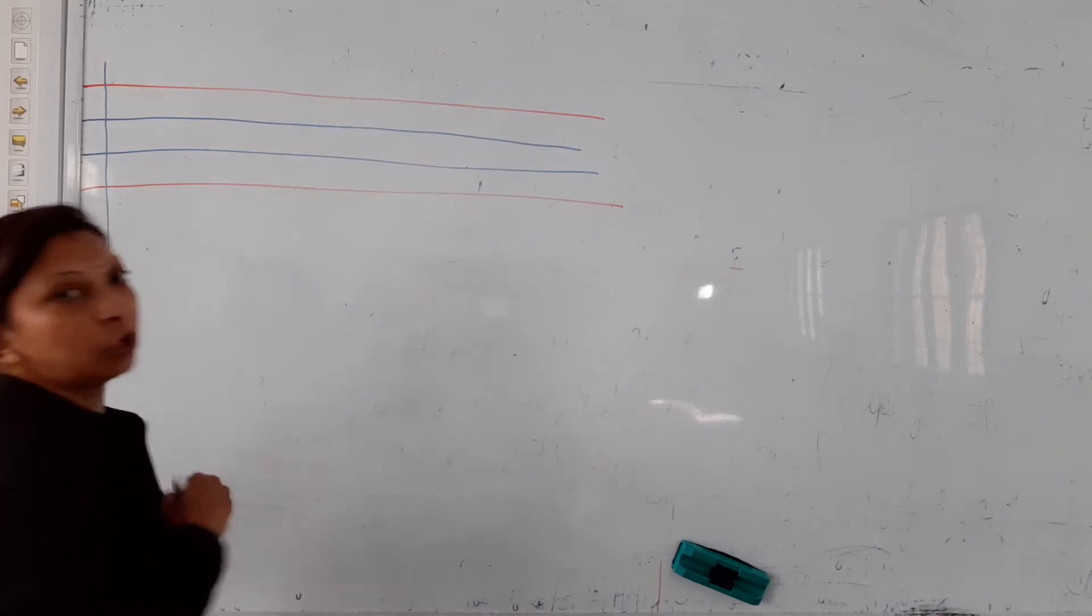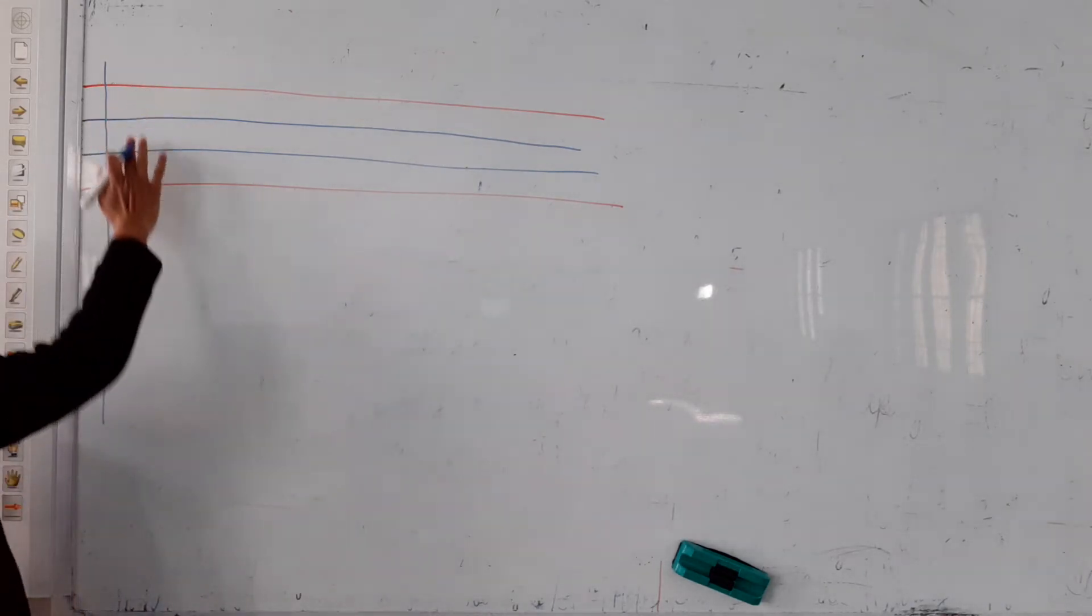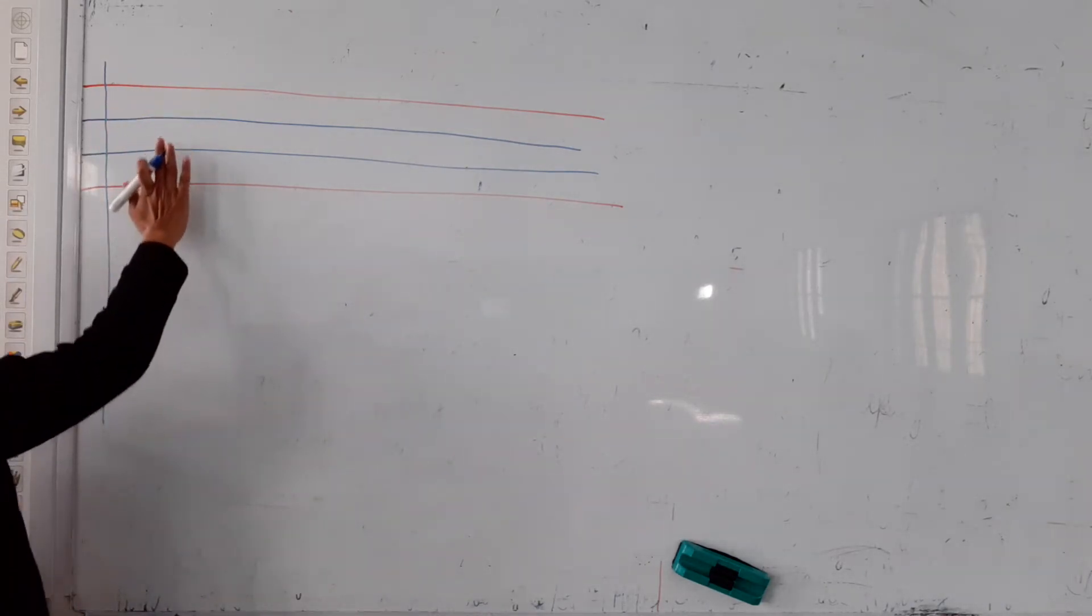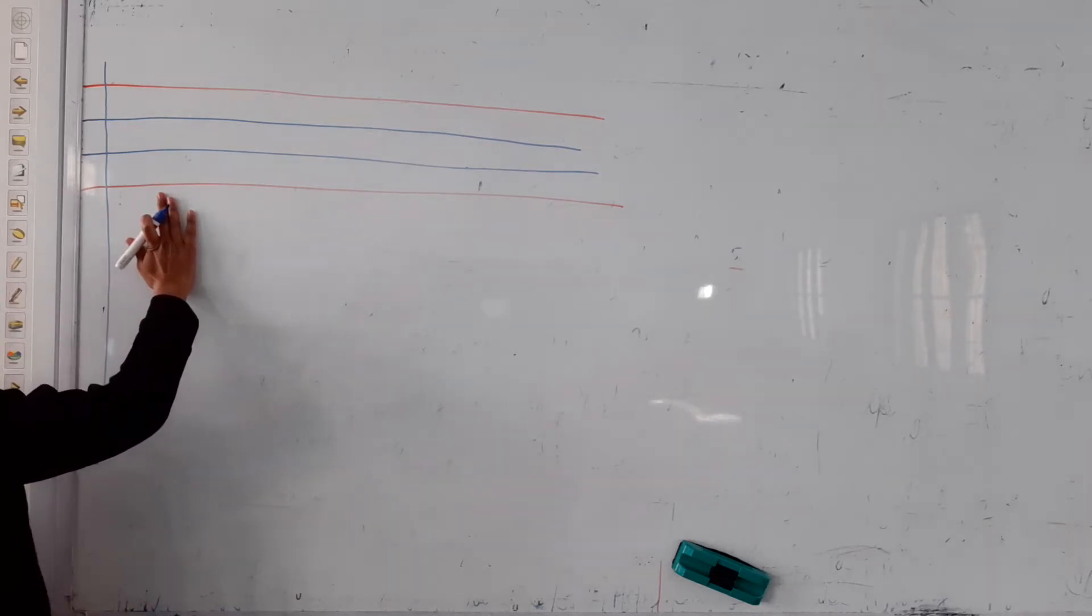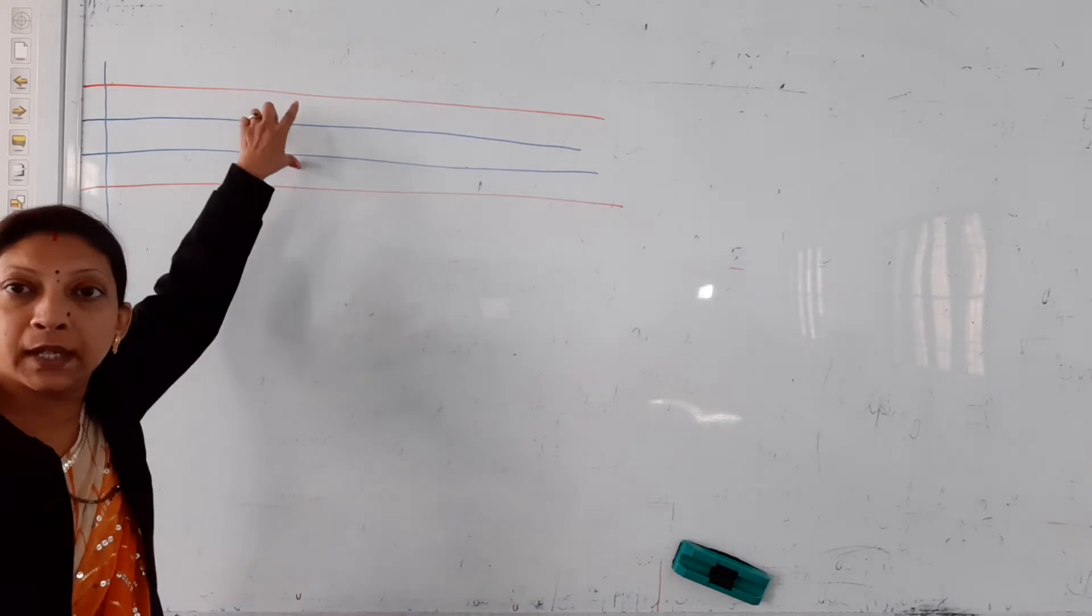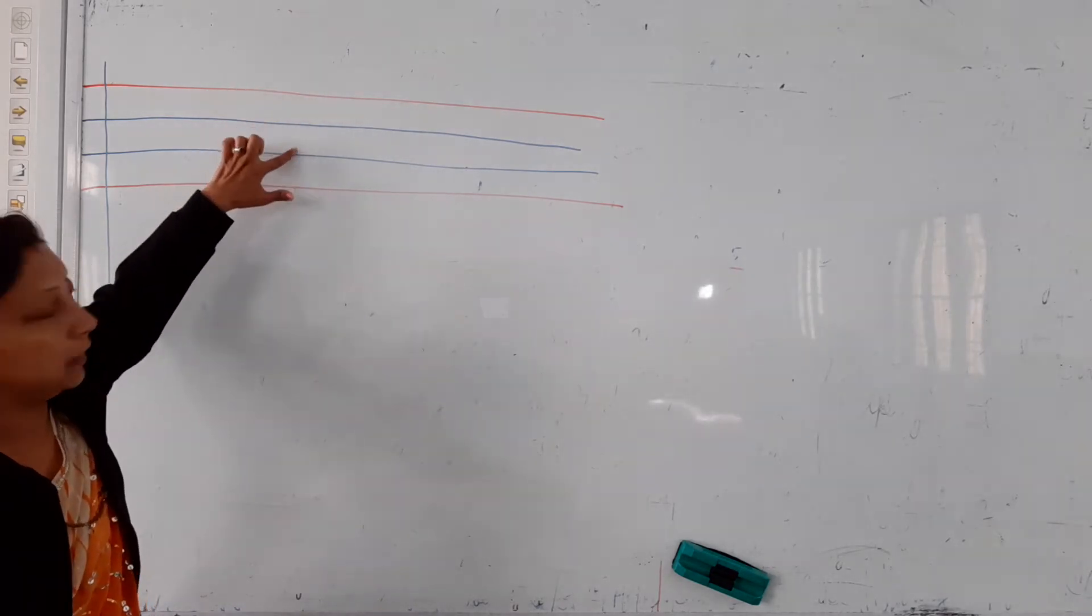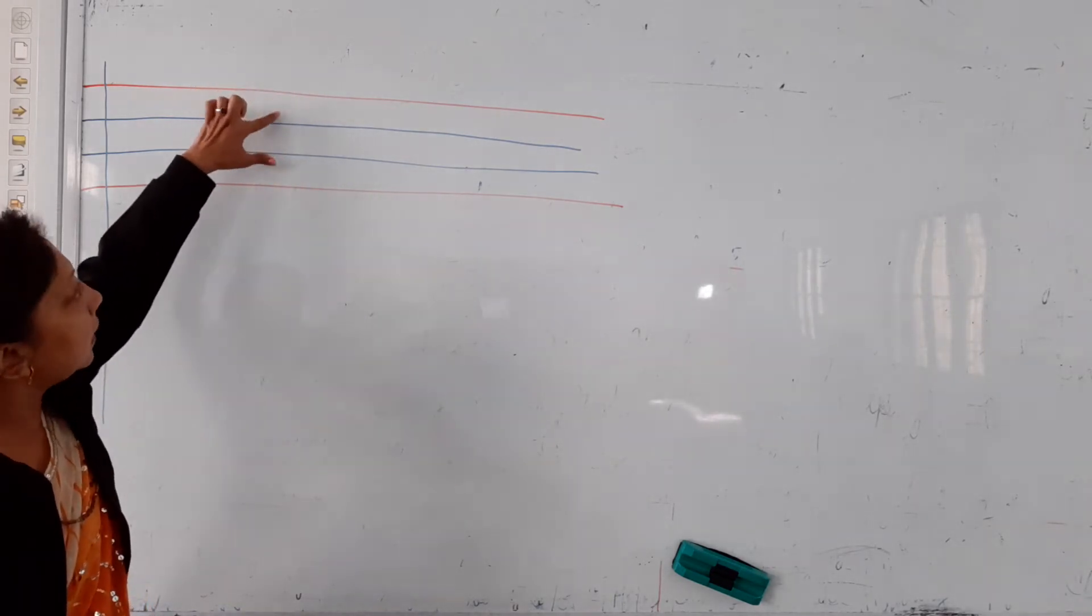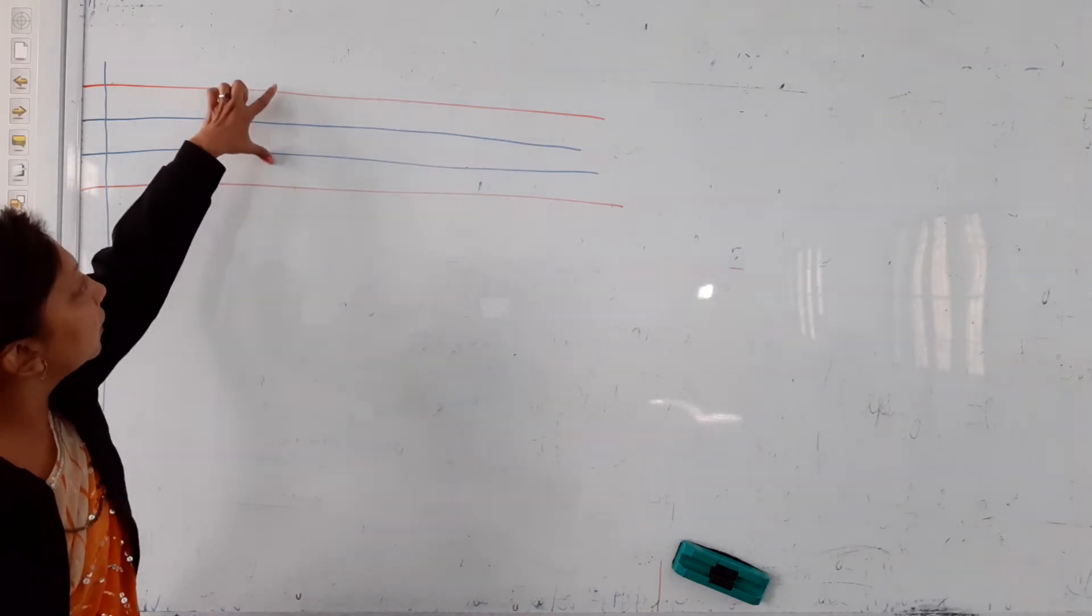Can you see these four lines? Red line and blue lines and red line again. Now small k will come within these three lines. Small k here, three lines. Red line and two blue lines, small k will come within these three lines.